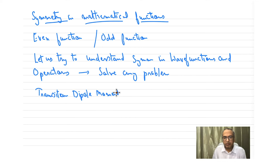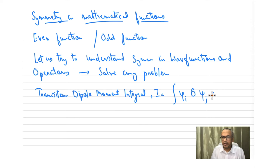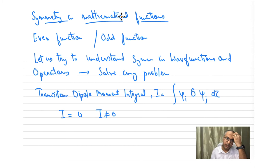The transition dipole moment integral is denoted by I, written as: integral of psi_i, operator, psi_j, d-tau. A lot depends on whether I goes to zero or I does not go to zero. If we can apply symmetry rules to determine whether I is going to be zero or not for a particular set of operators and wave functions, that would be very powerful.